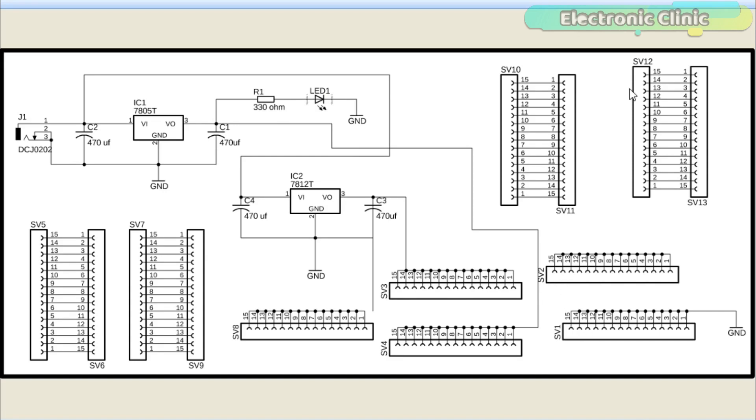From SV1 to SV12 these are the male and female headers. As you can see all the legs of the SV1 are connected together and then connected with the power supply ground. SV2 and SV8 are used for the 5 volts and 3.3 volts from the Arduino. SV4 is connected with the 5 volt regulator. SV3 is connected with the 12 volt regulator while all the other headers are used for the sensors.